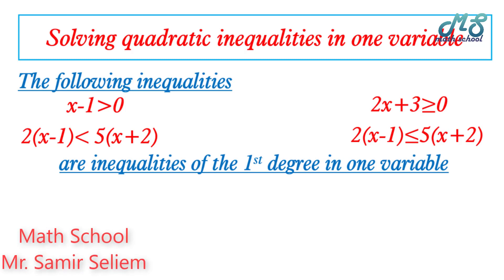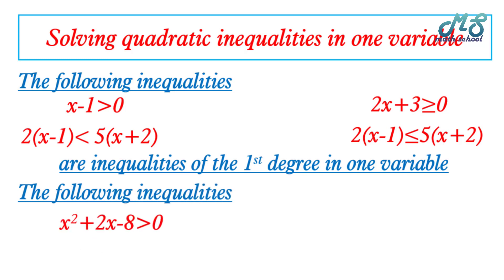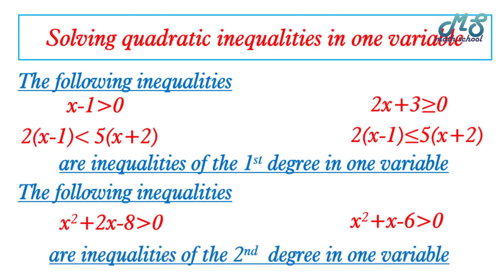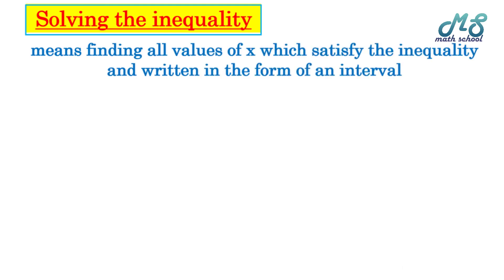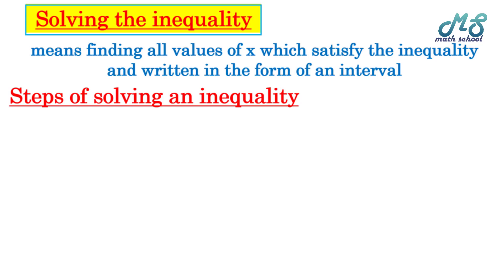These are inequalities of the first degree in one variable x. But the following inequalities we will study: x² + 2x - 8 > 0 and x² + x - 6 > 0 are inequalities of the second degree in one variable, because the greatest power of x is 2. Solving the inequality means finding all values of x which satisfy or verify the inequality, written in the form of an interval.